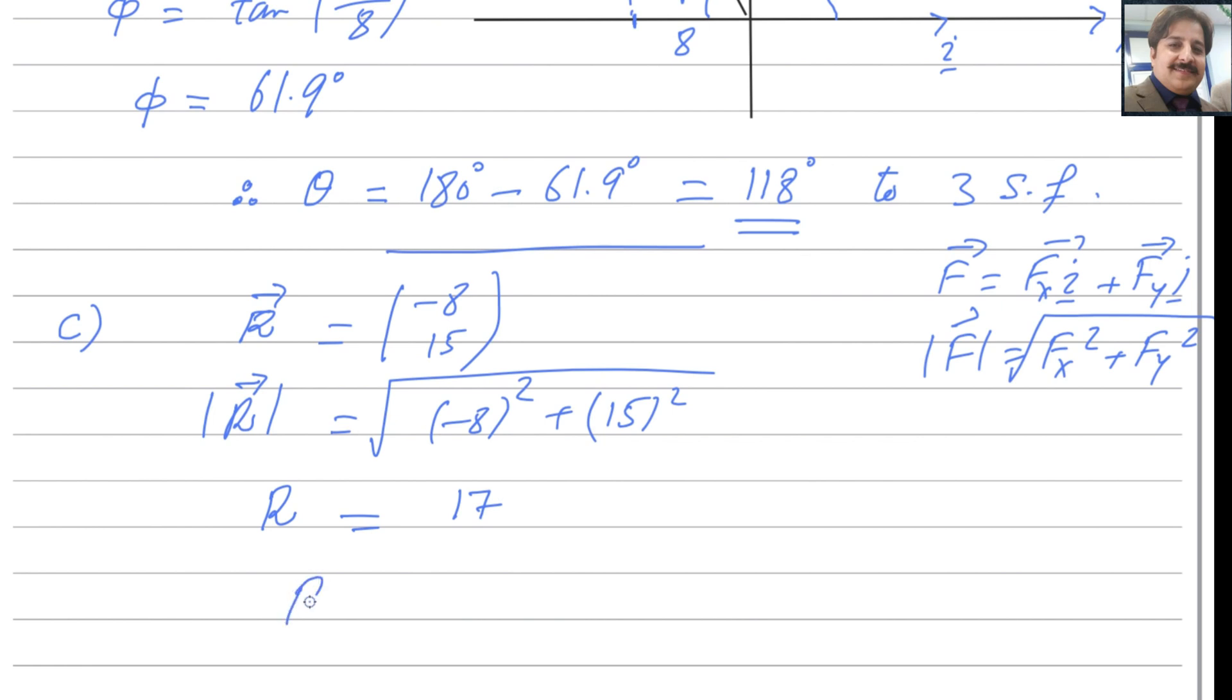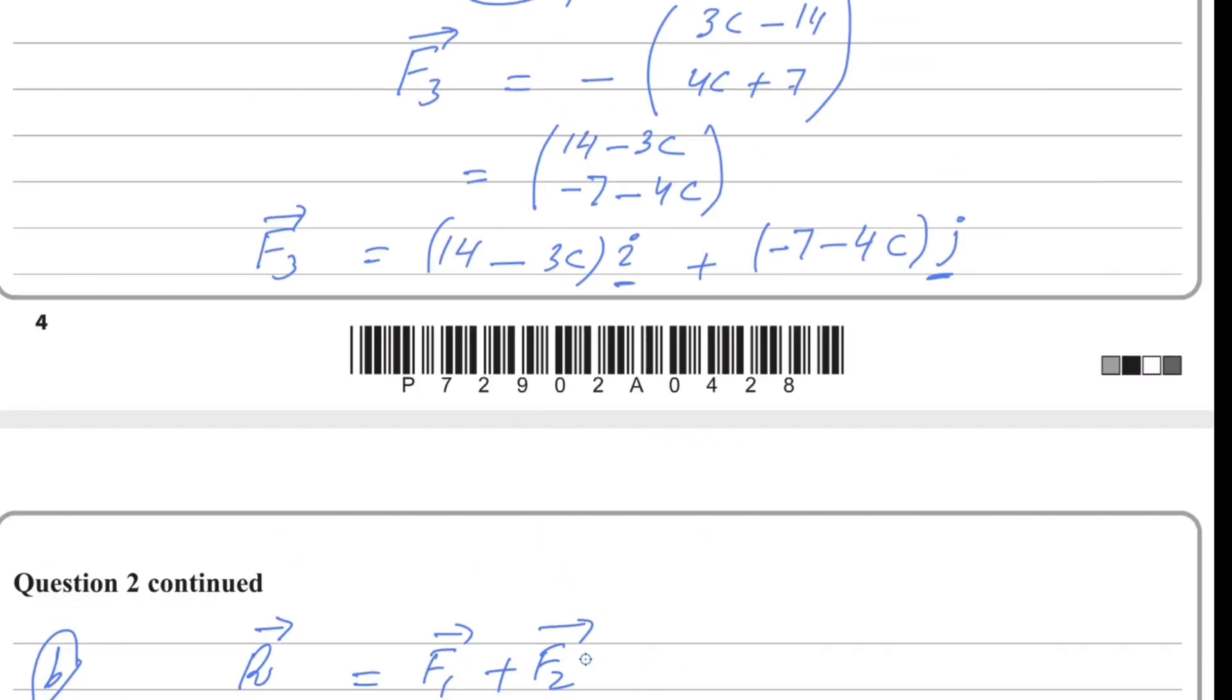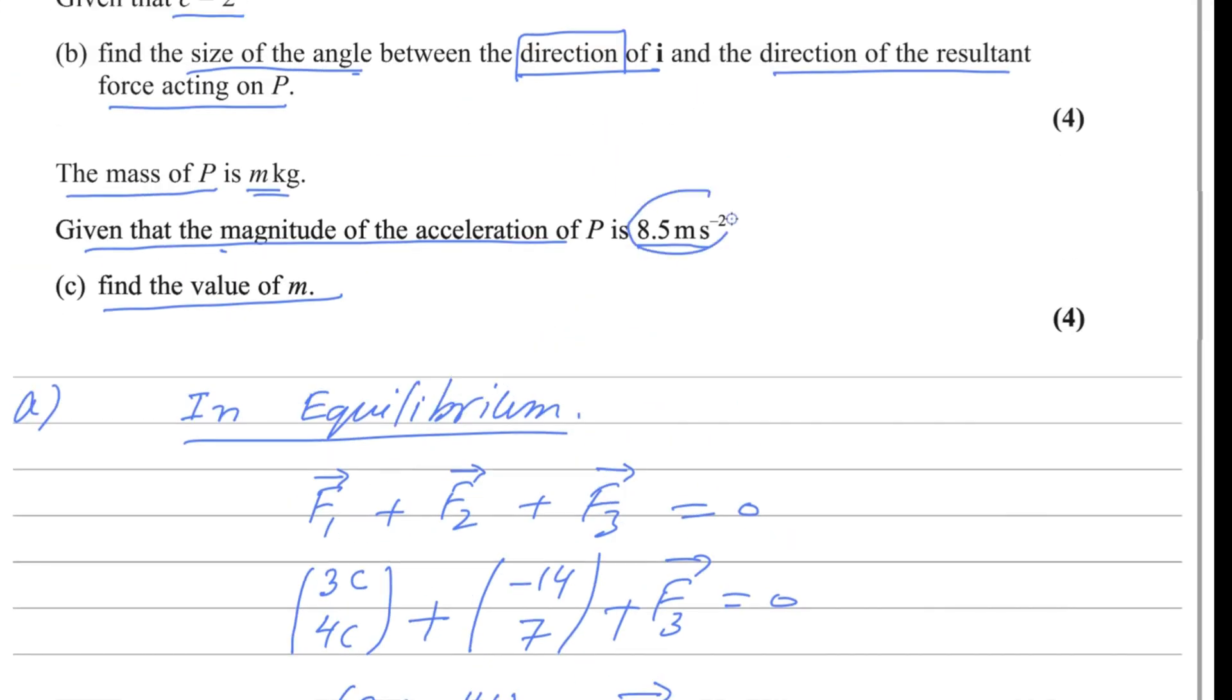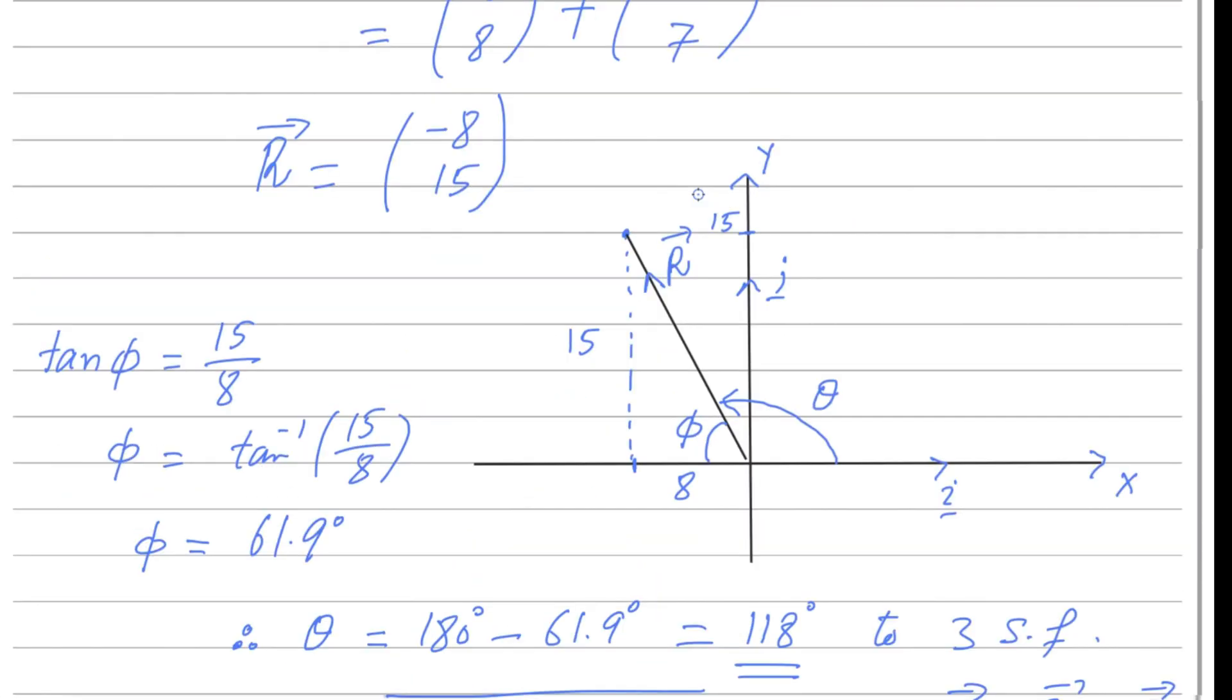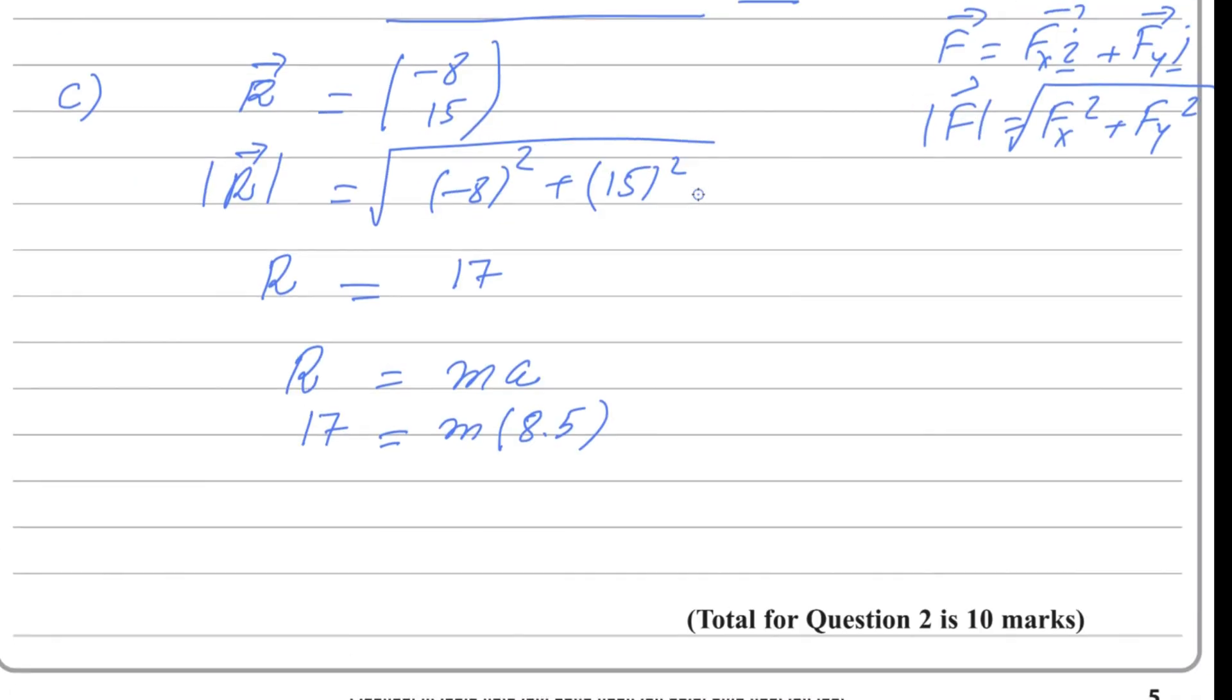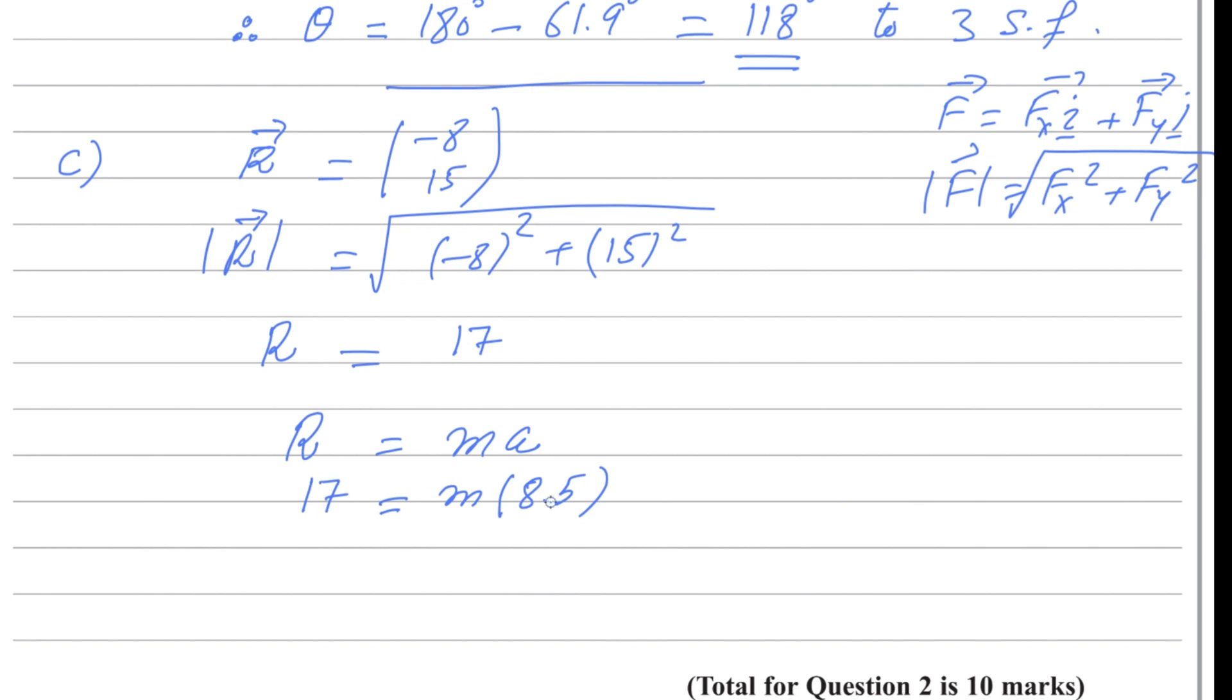We know that by Newton's second law, R equals ma. Net force formula is ma. R we just found, that is 17, mass we need to find, and acceleration for particle P is 8.5. Plug in the values. From here you could get the answer for m easily. Divide 17 by 8.5, you get the answer as exactly 2 kilogram.